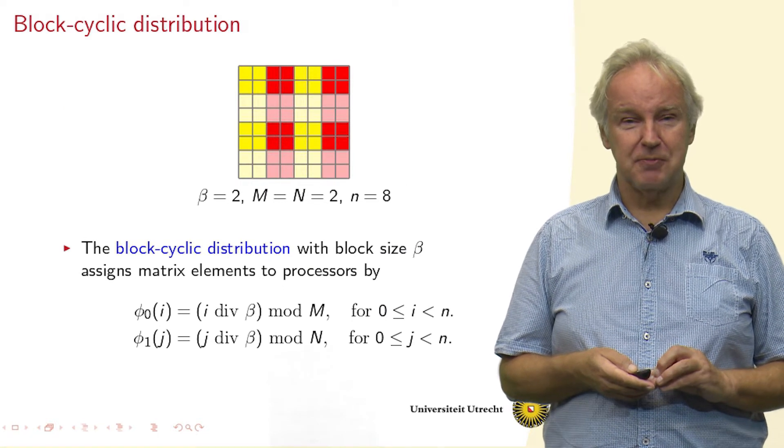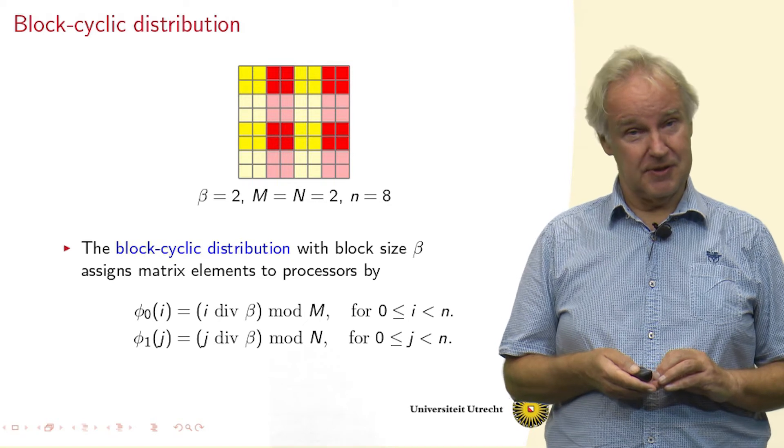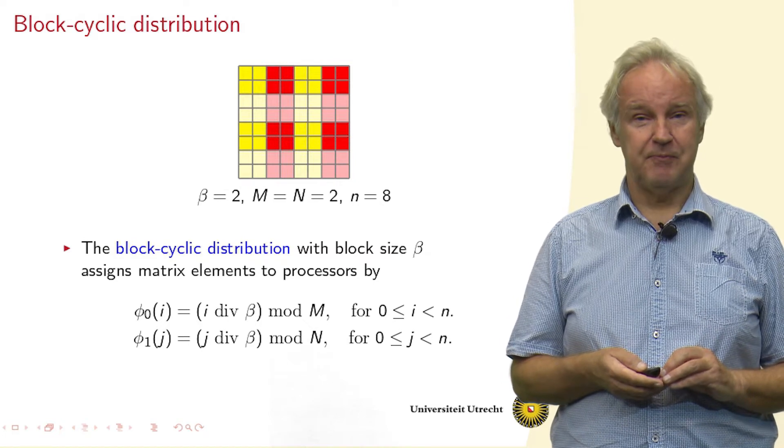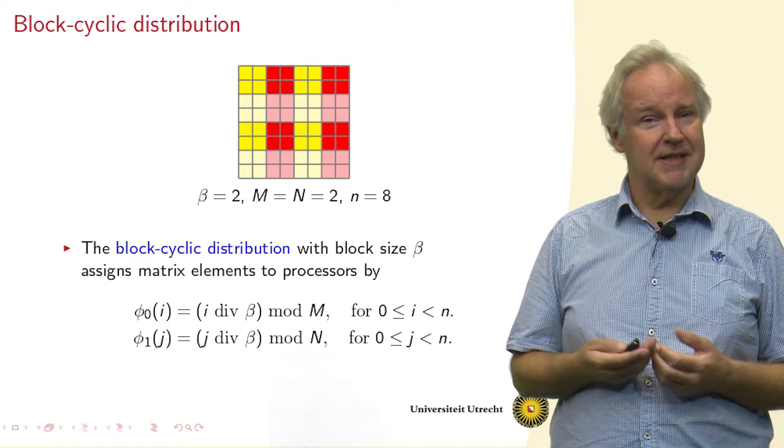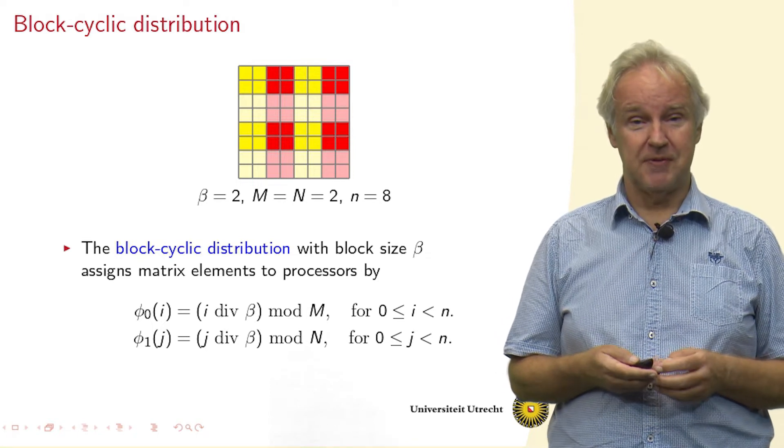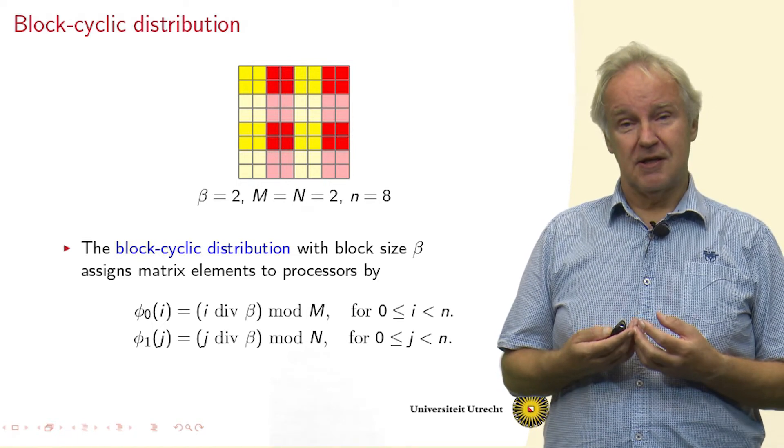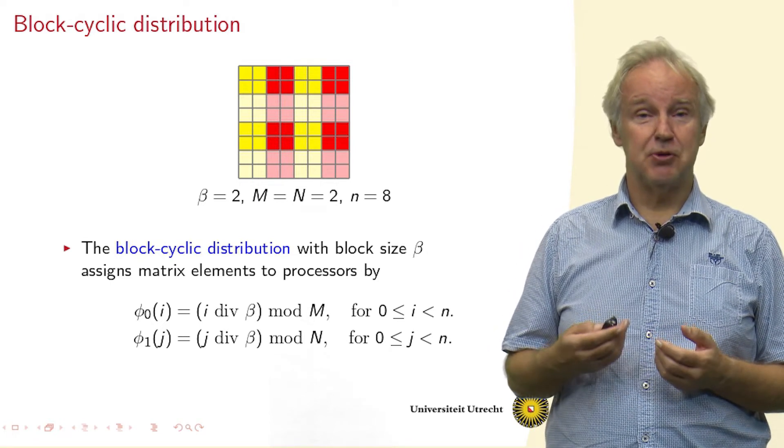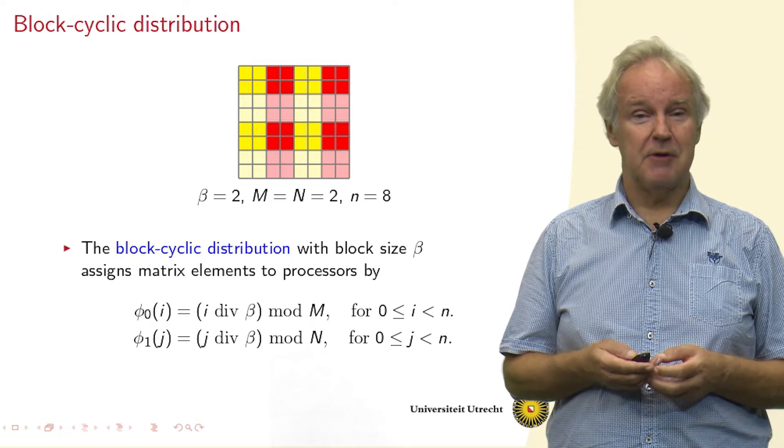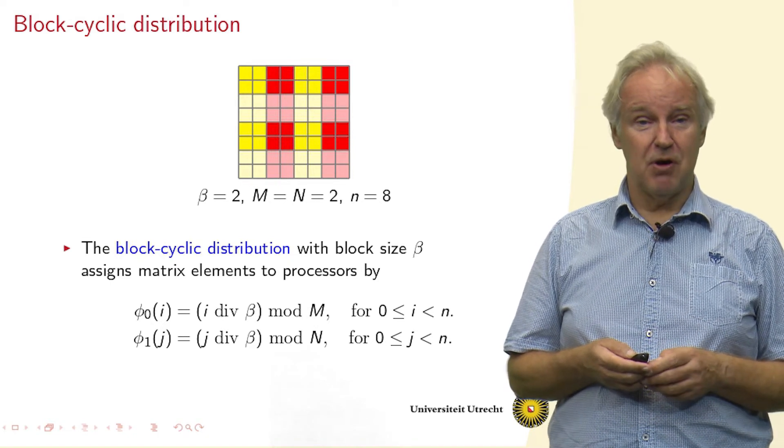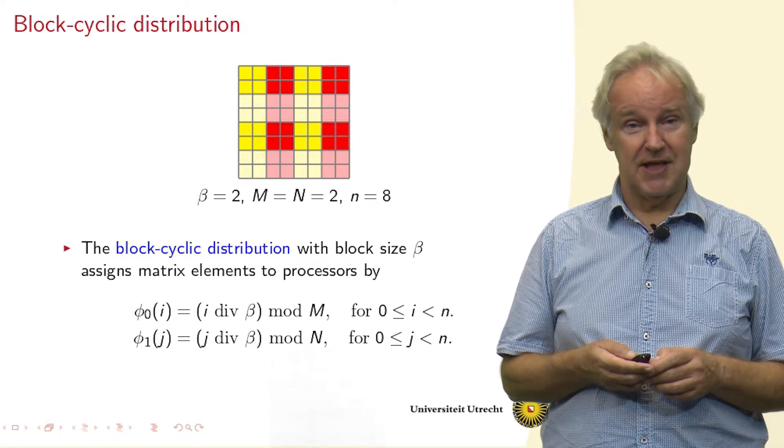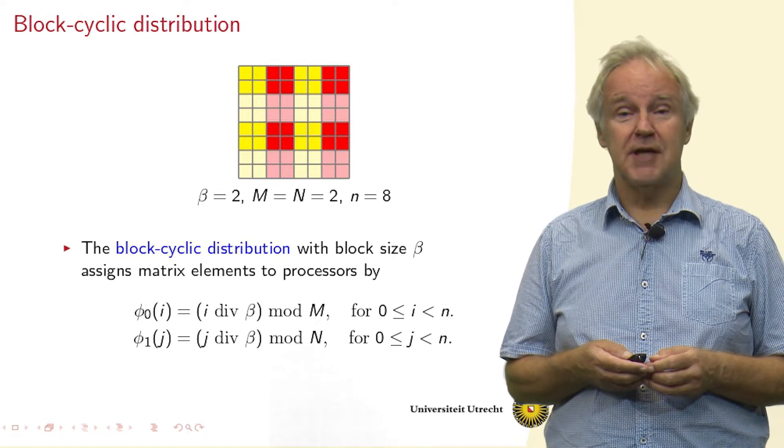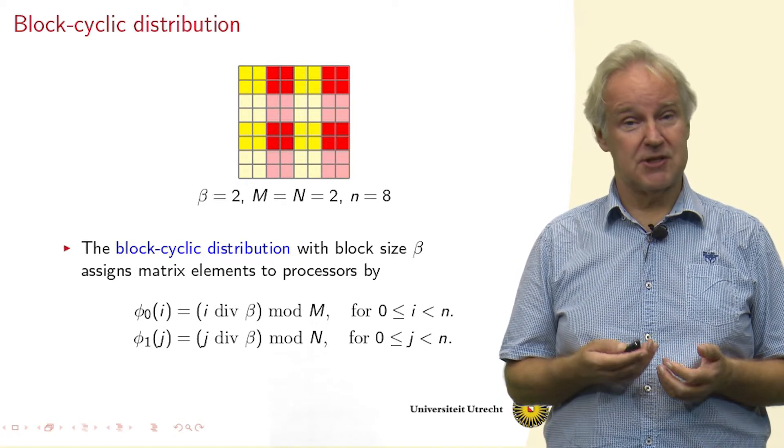A way of distributing the matrix that we have seen is the cyclic distribution. Another one is the block distribution. But we can also combine them, and that is the block cyclic distribution, where basically you take little blocks of the matrix and distribute them in a cyclic distribution. Here we see an example with a block size β = 2, meaning we have little 2 by 2 blocks. Those we distribute by the cyclic distribution over 2 times 2 processors. A square cyclic distribution.